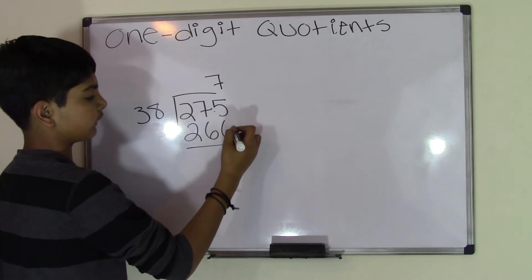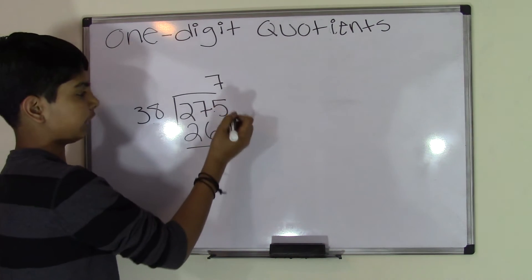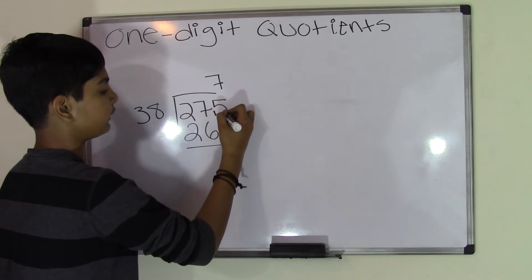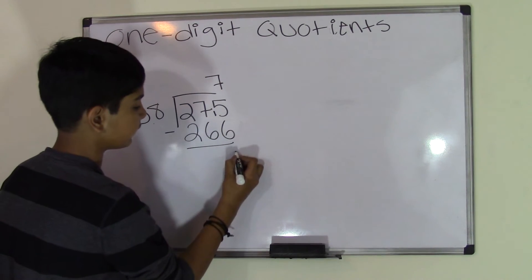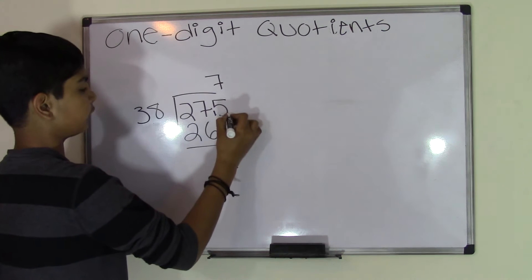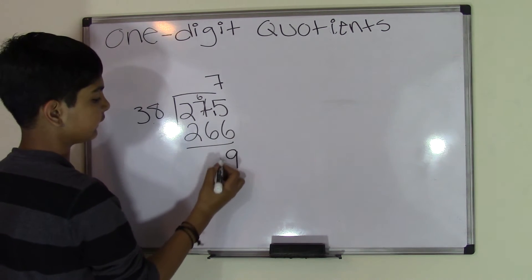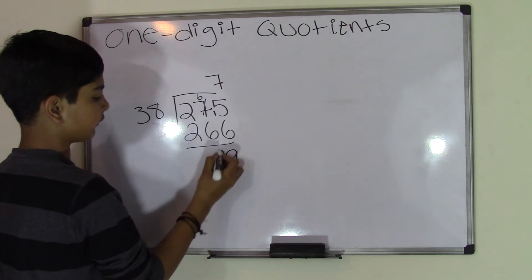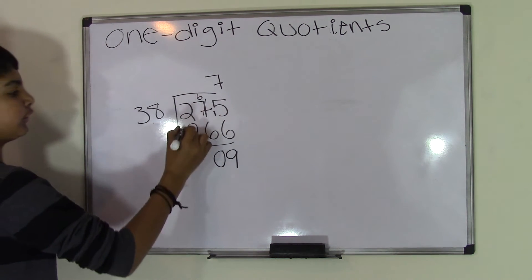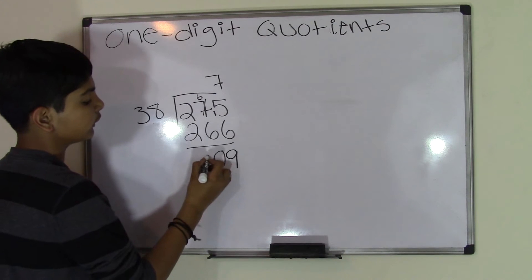5 minus 6. Well, 5 is smaller, so we'll borrow 1 to make it 15. 15 minus 6 is 9. Since we borrowed that 1, the 7 becomes 6. 6 minus 6 evenly goes into, so that's 0. And 2 minus 2 evenly goes into, so that's 0 as well.